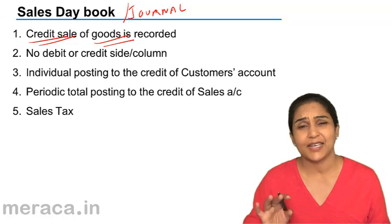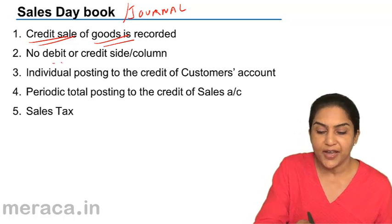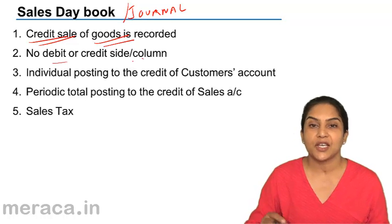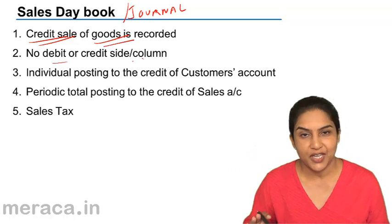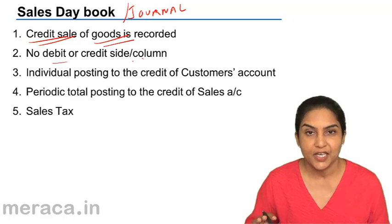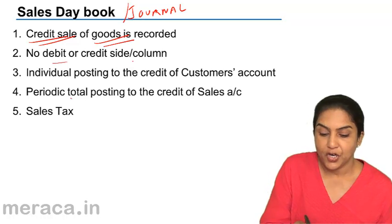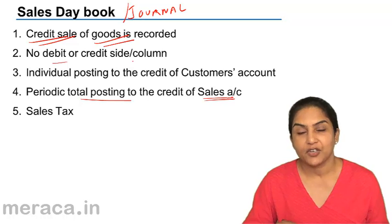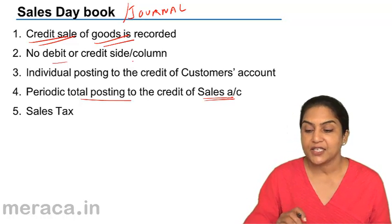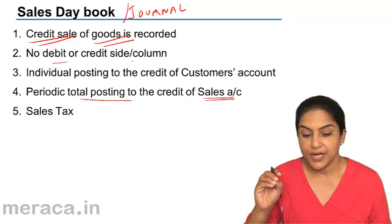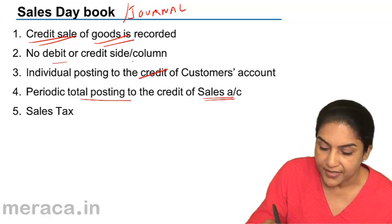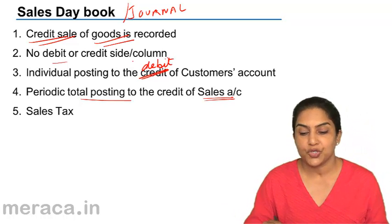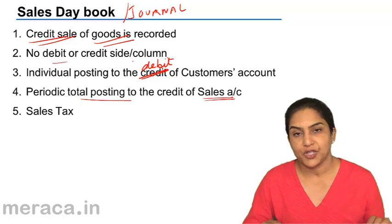The format is exactly the same as the purchase day book — it does not have a debit or a credit side. How do we post? We take the total of the sales and take it to the credit side of the sales account. Sales is an income, it's always credited. So the periodic total posting is taken to the credit of the sales account. Individually, the customer's account is taken to the debit — individual posting is to the debit of the customer's account.